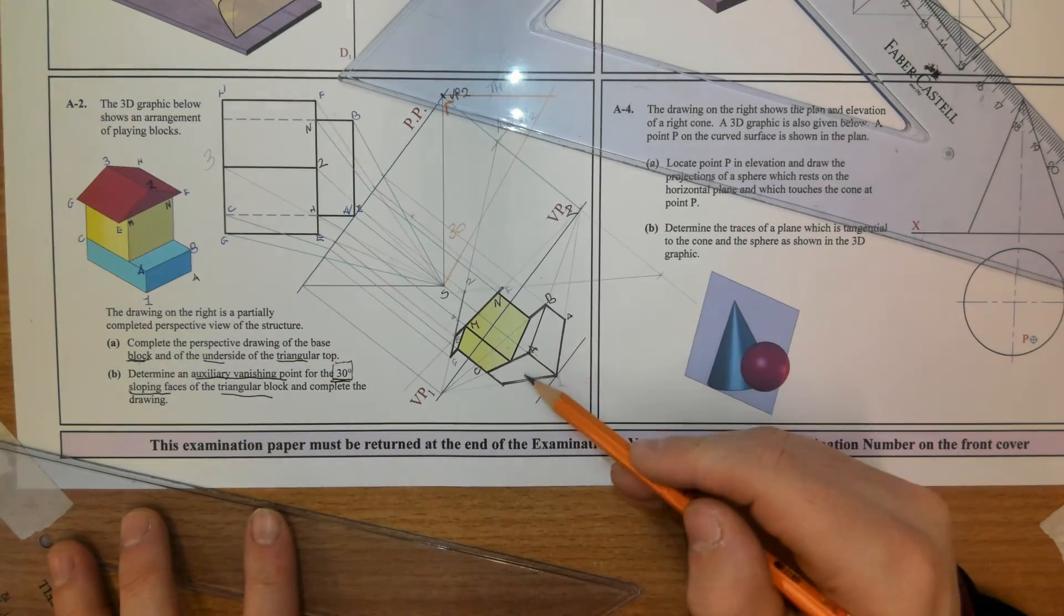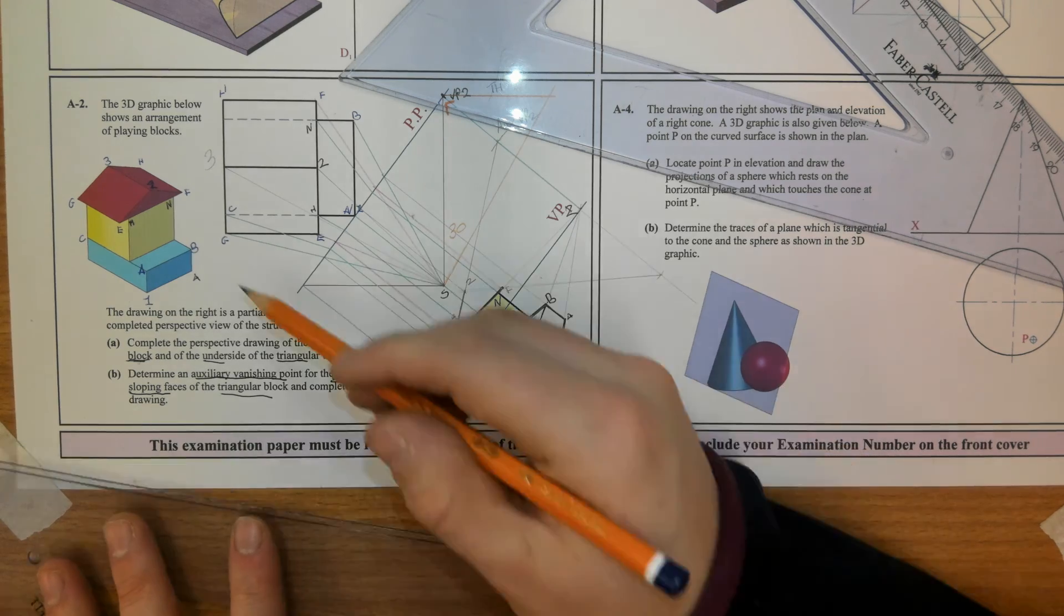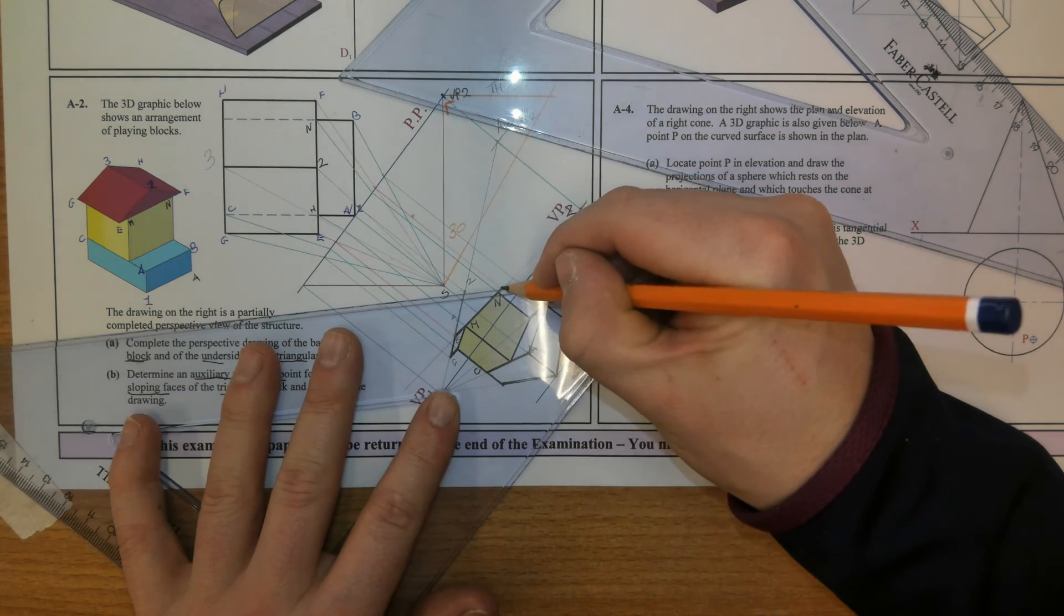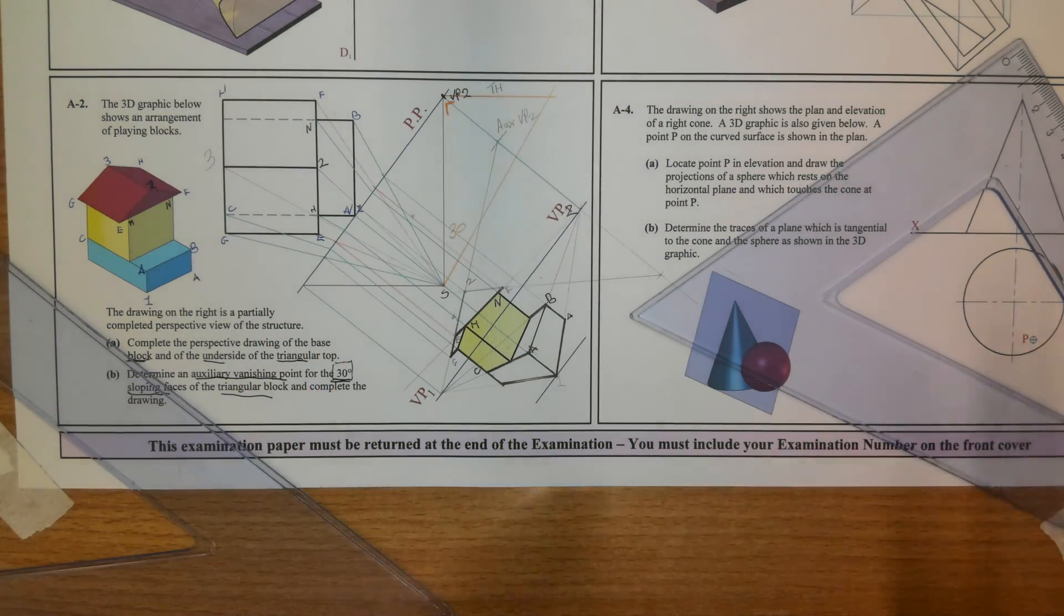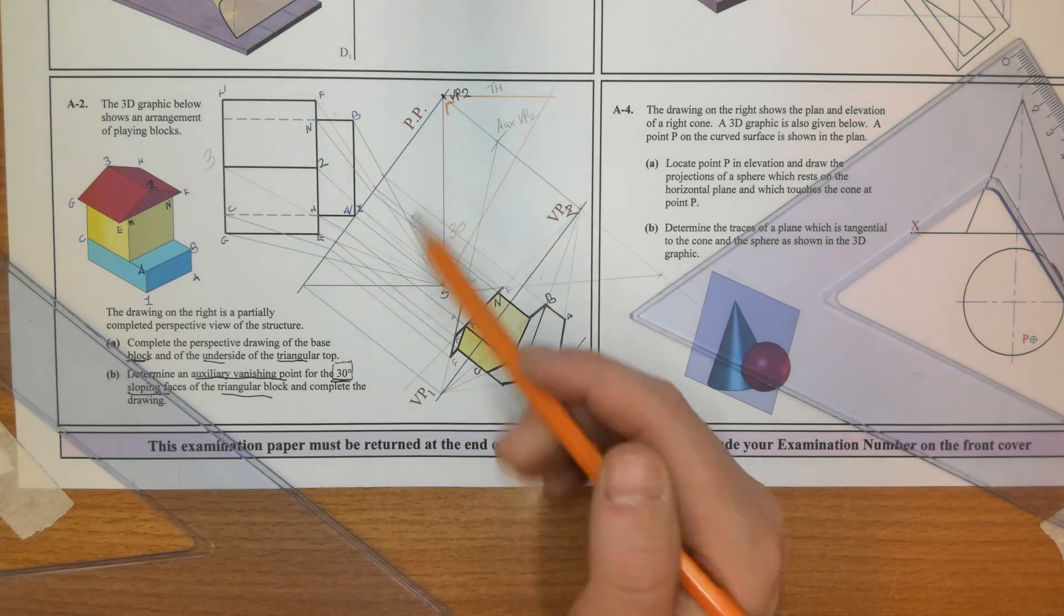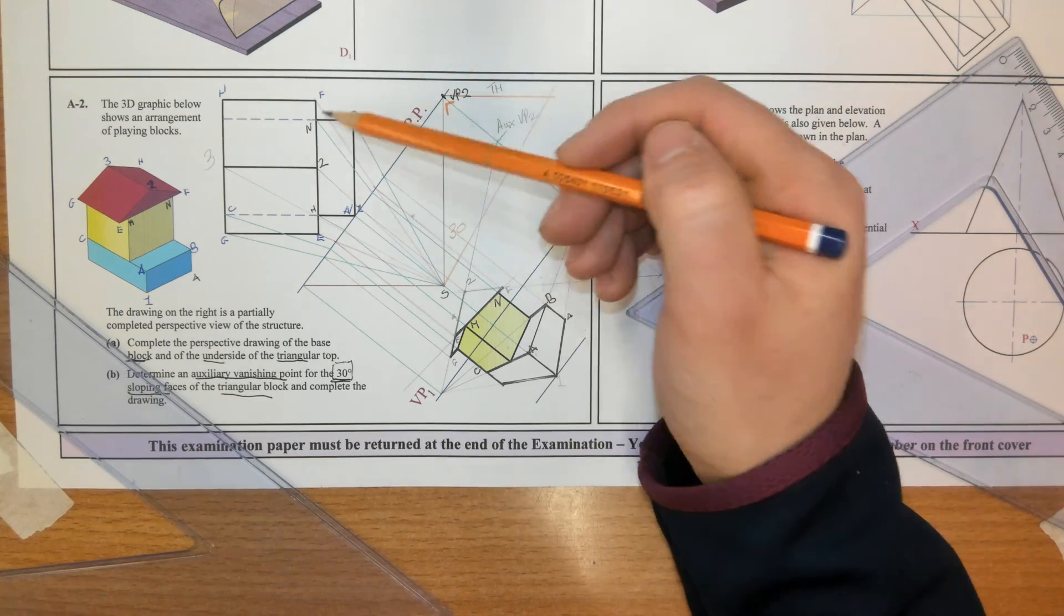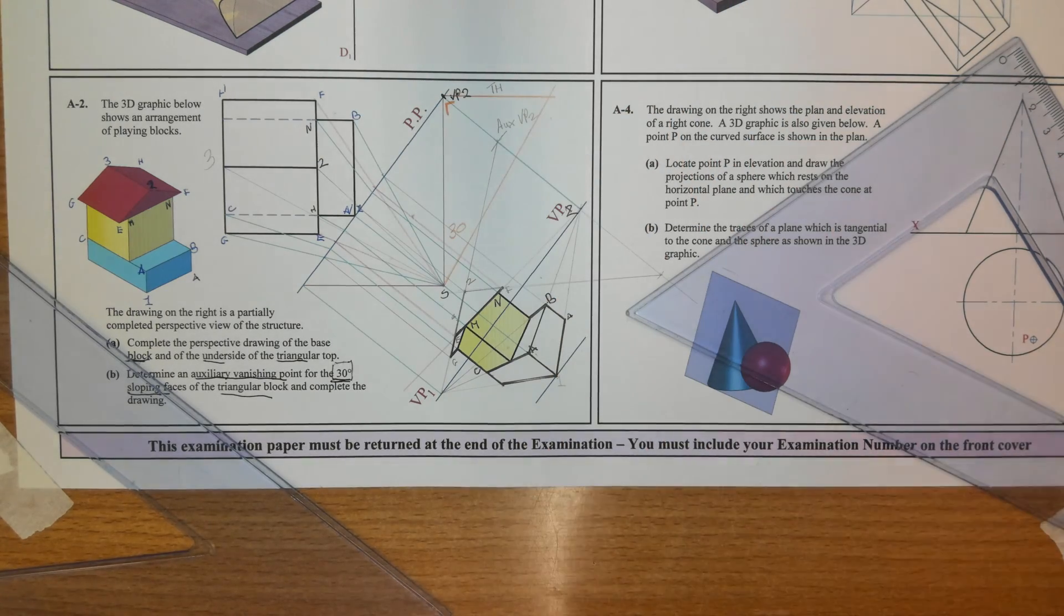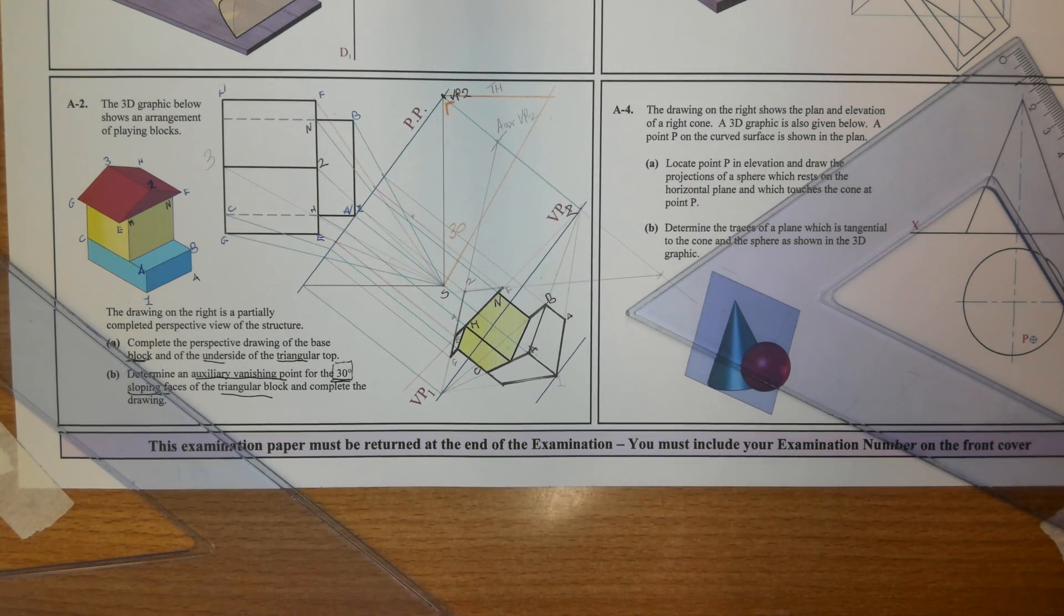So that's the blue block there, that's the yellow one, and this is the red triangular underside. Remember, you've got to make sure you do the construction to find the auxiliary vanishing point to the right lines. And that's the true height. Okay. Cheers. Thank you. Bye bye.